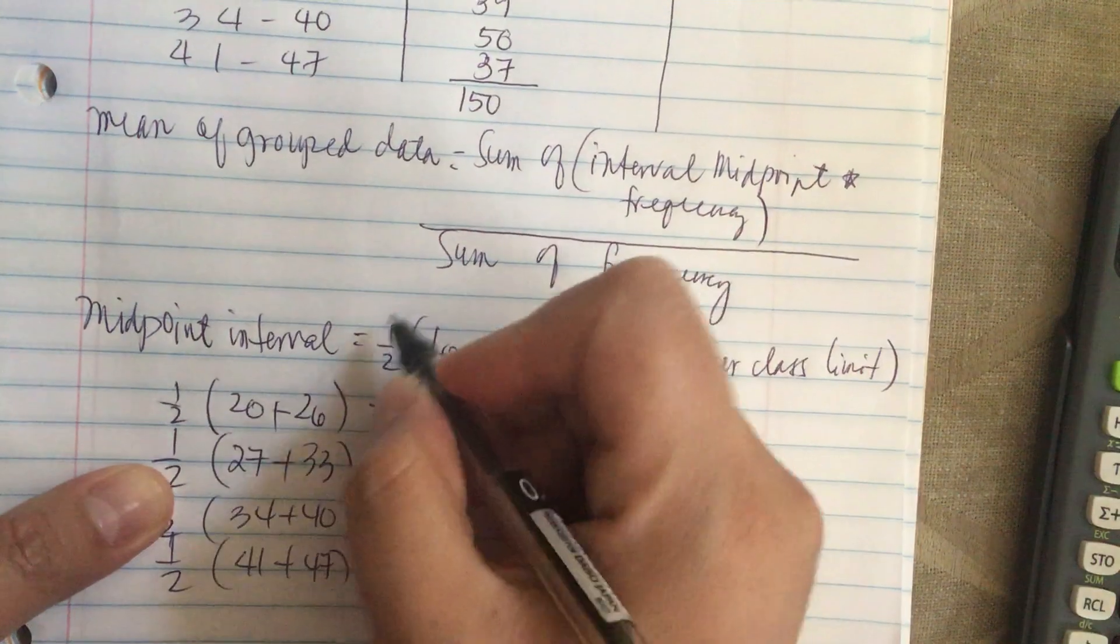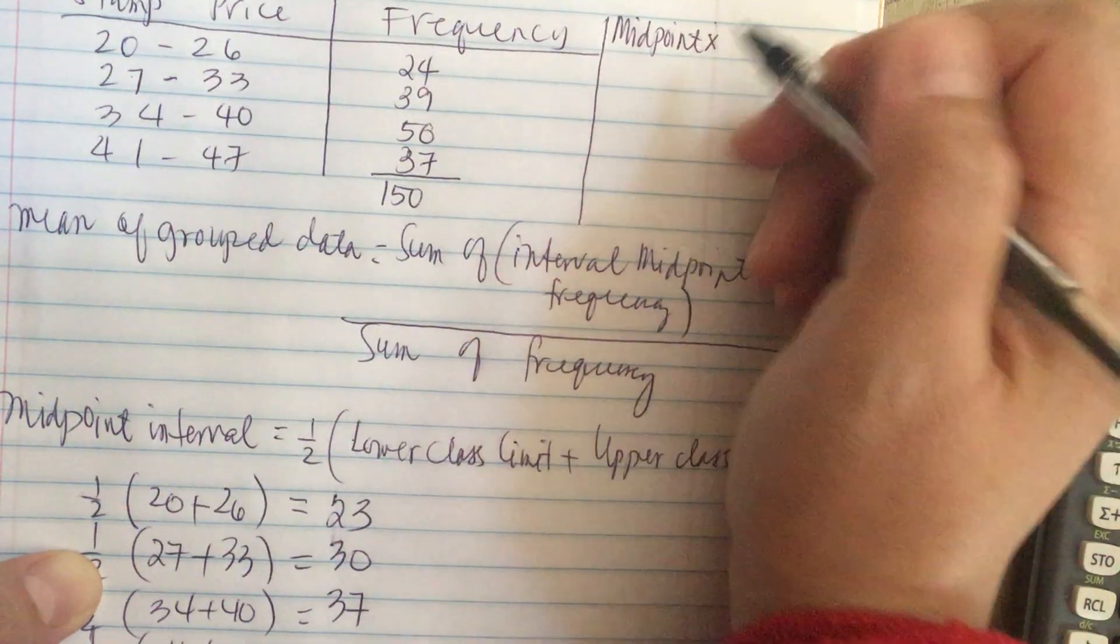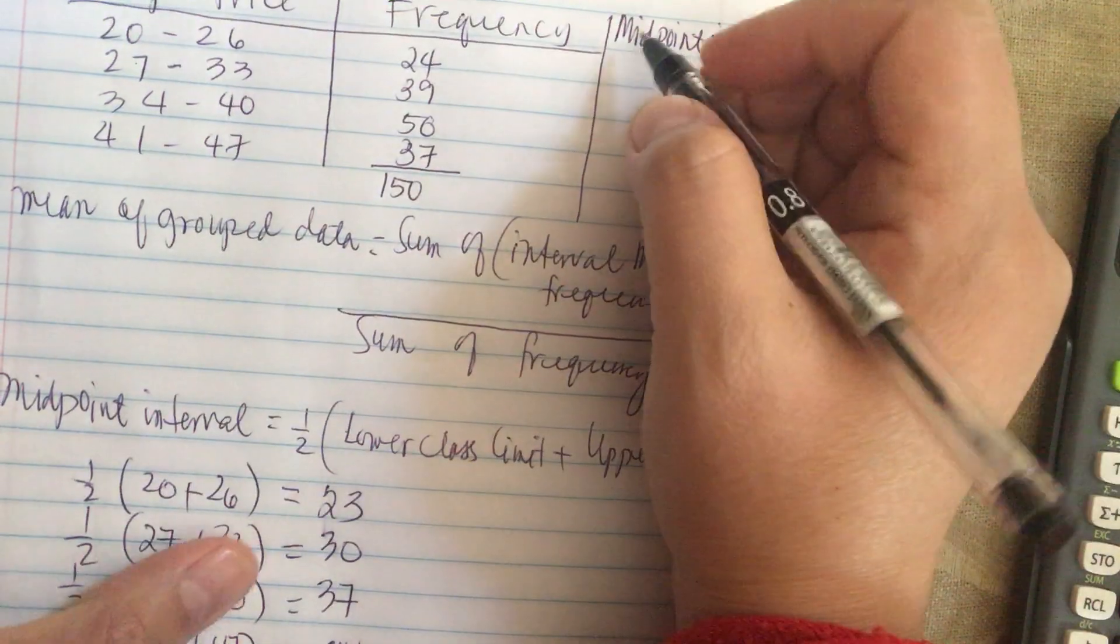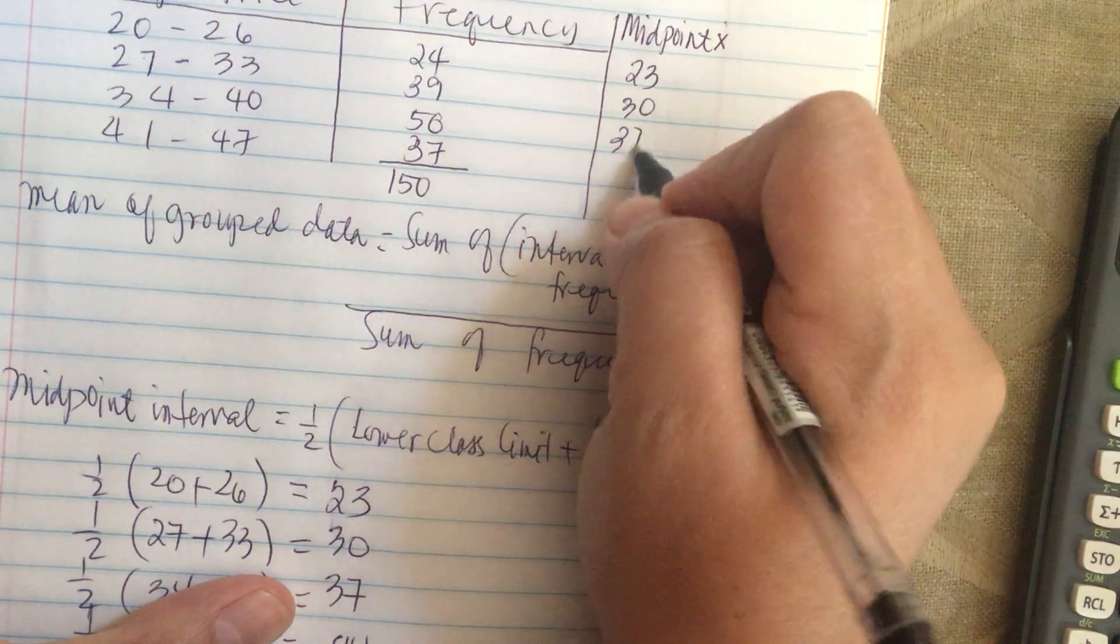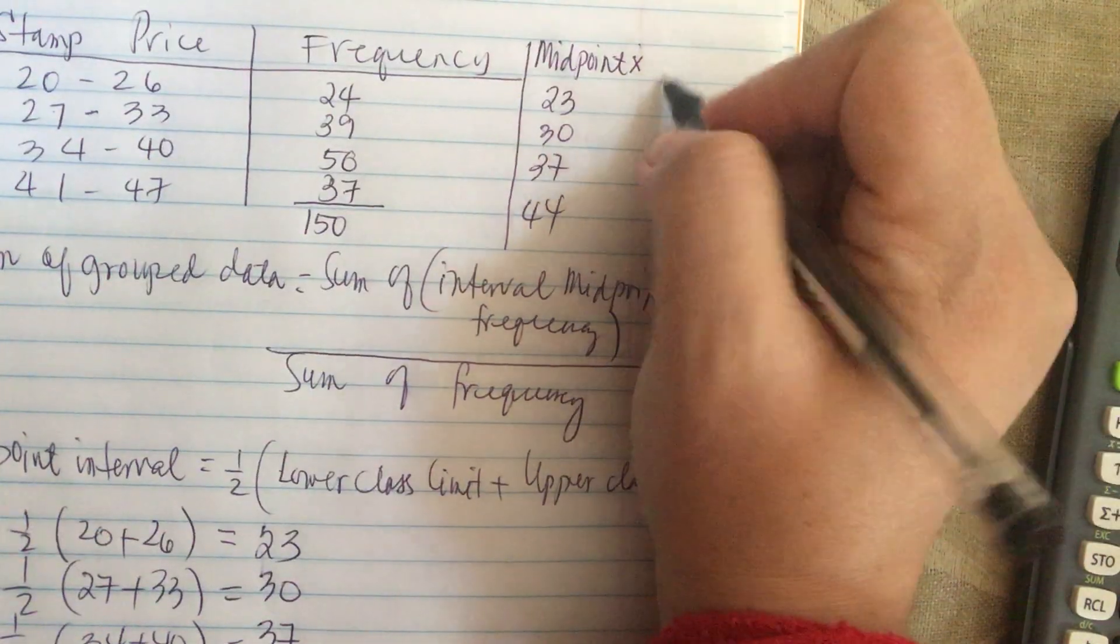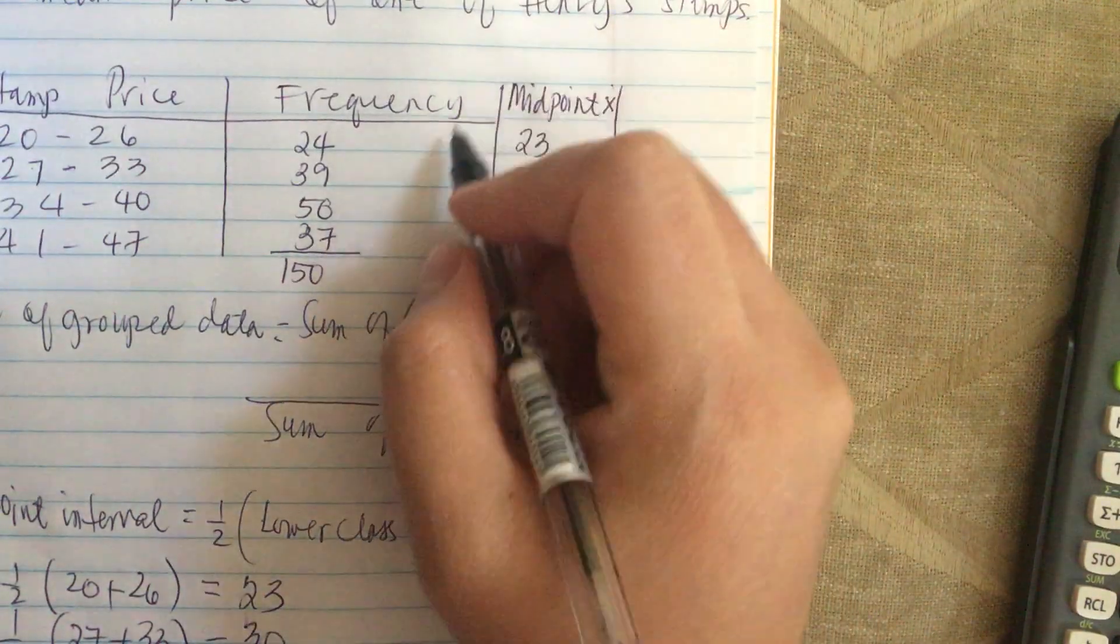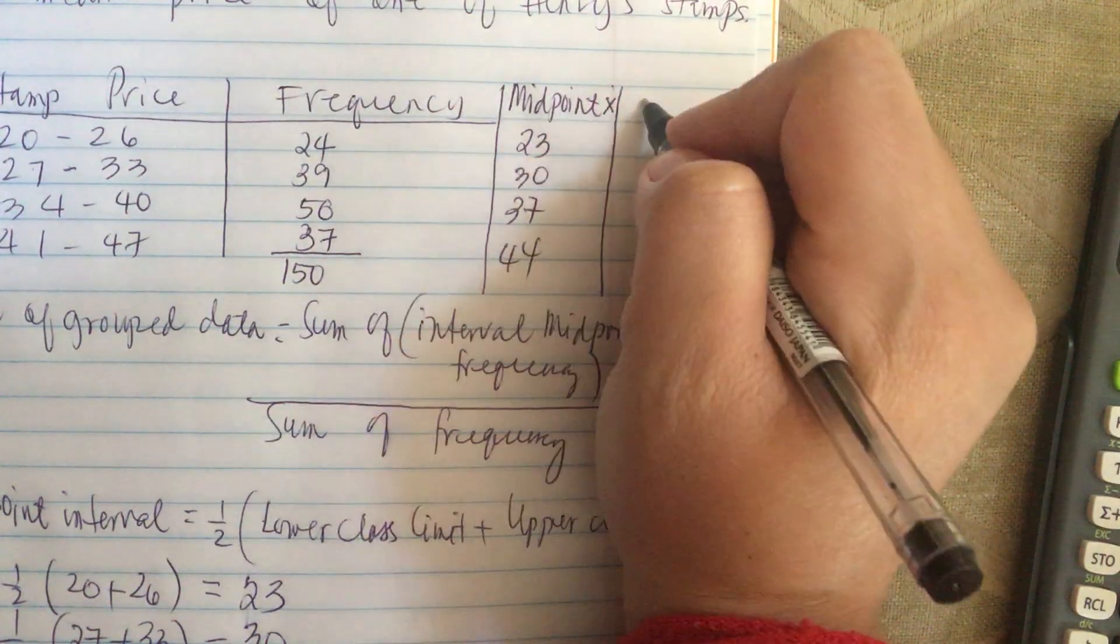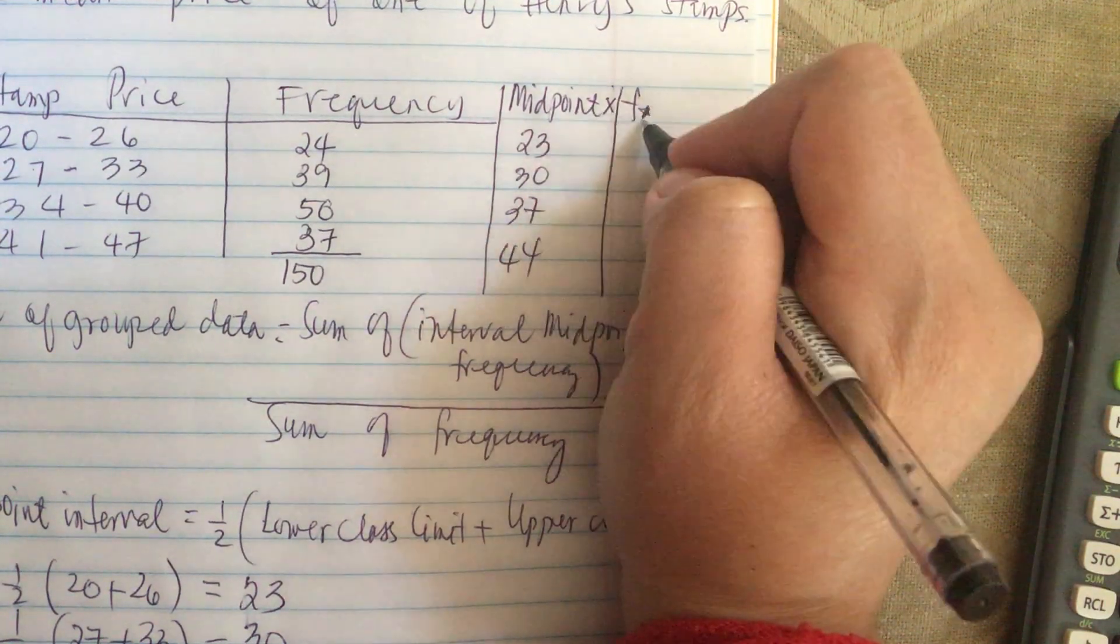So now this is the midpoint x. Let's put it in: 23, 30, 37, and 44. Now let's make another column and this is the frequency times the midpoint x.